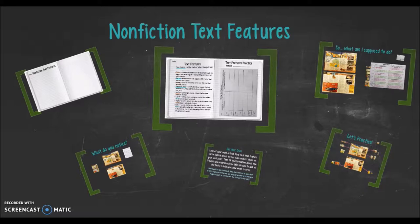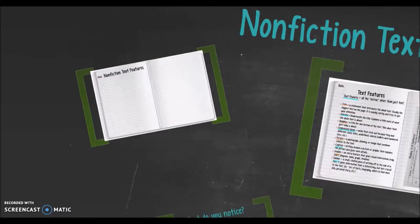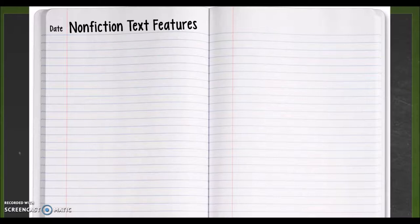Today you're going to need two things in front of you. You're going to need your magazine, which you should have in your folder, and you're going to need, of course, your reader's notebook. So let's start. Left-hand side of your notebook, write nonfiction text features and today's date.